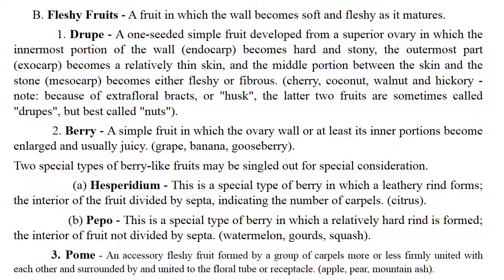Fleshy fruit: fruit in which the wall becomes soft and fleshy at maturity. Drupe means one-seeded simple fruit developed from a superior ovary — for example cherry, coconut, walnut. Berry means simple fruit in which the ovary wall, or at least its inner portions, becomes enlarged and fleshy — like grape, banana, gooseberry. Hesperidium is a special type of berry in which a leathery rind forms, e.g. citrus. Pepo means a special type of berry where a relatively hard rind is formed, like watermelon, gourds, squash.